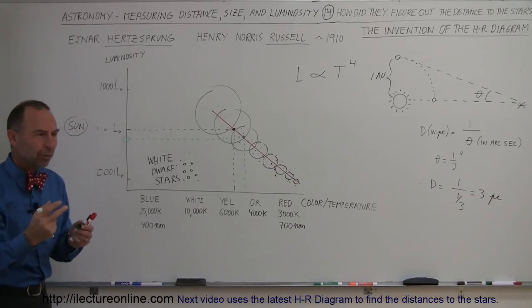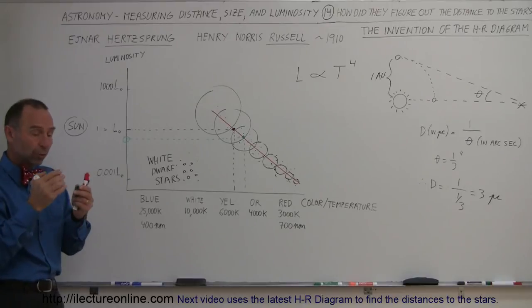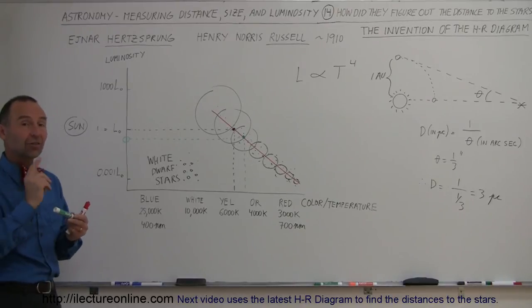So now we would have the real luminosity of the star, we would have the apparent luminosity, and with those two indicators, with those two results, we could actually find the distance of the star.